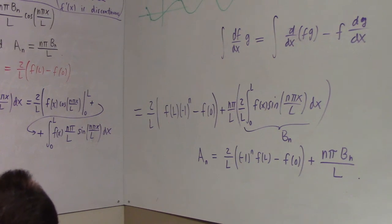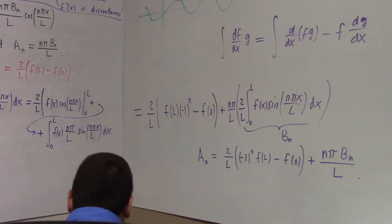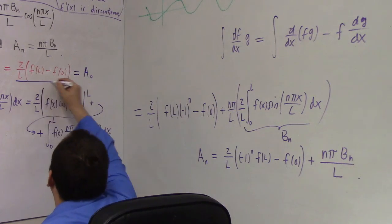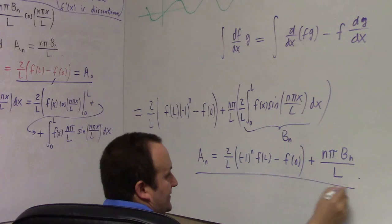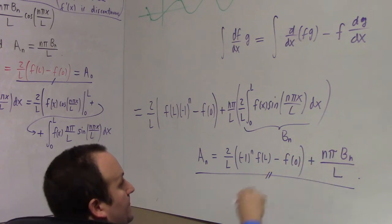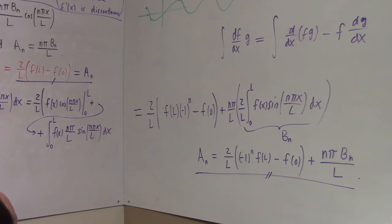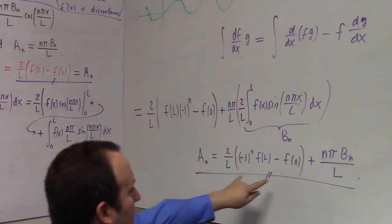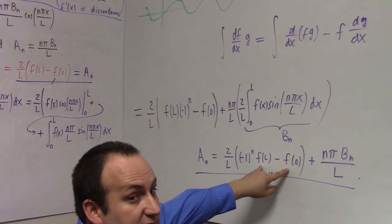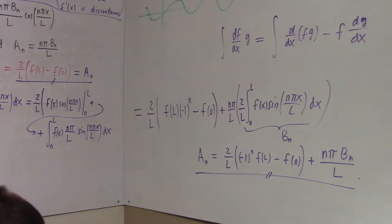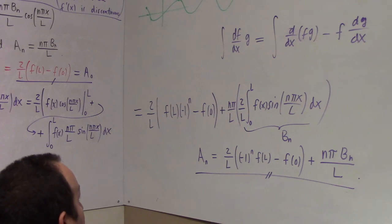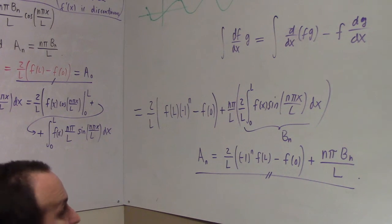So we have derived that A-sub-n = (2/L)[(−1)^n f(L) − f(0)] + nπ B-sub-n / L. We wanted A-sub-n = 0 and A-sub-n = nπ B-sub-n / L for term-by-term differentiation. This can only happen if both f(0) = 0 and f(L) = 0, because of the (−1)^n factor — just having f(L) = f(0) doesn't suffice. So that's where the condition for the sine series term-by-term differentiation theorem comes from.